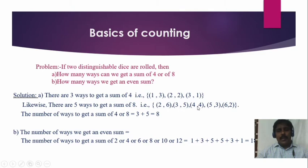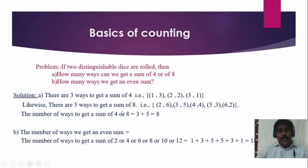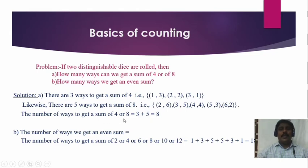For a sum of 8, there are 5 ways. So the number of ways to get a sum of 4 or 8 — since sum means 'or' — is 3 ways plus 5 ways, that equals 8 ways. So the number of ways to get a sum of 4 or 8 is 8 ways. This is the answer for the given question.